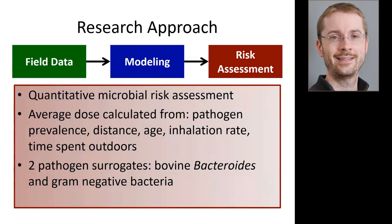For risk assessment, we used QMRA and calculated average dose from several variables: pathogen prevalence — the fraction of farms with a given pathogen at any given time, about 40% for both E. coli O157 and Salmonella according to USDA data — distance, the age of the person exposed (which controls inhalation rate), and the time spent outdoors. Dose is the product of concentration and the amount of air inhaled.